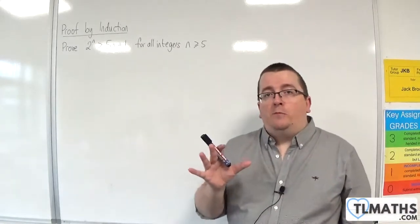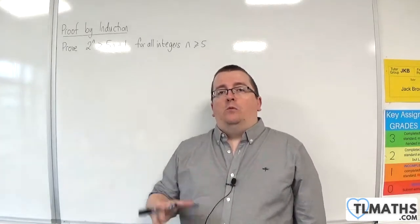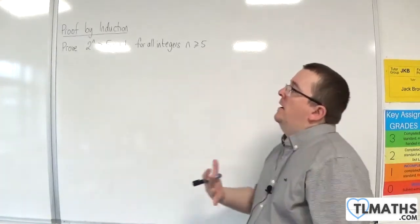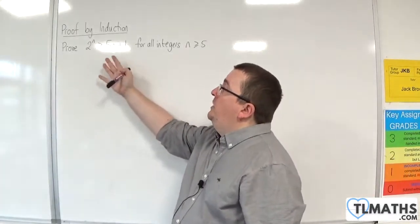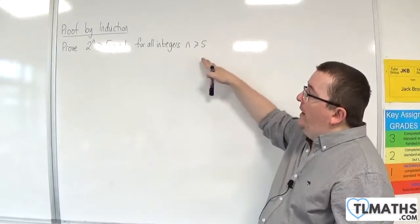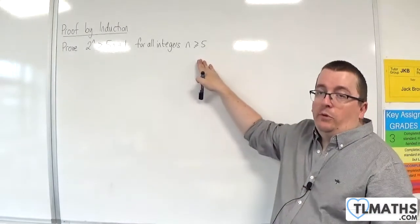In the next few videos, we're going to be looking at proof by induction examples where we're dealing with inequalities. And the first example I want to go through is this one, where we're going to prove that 2 to the n is greater than 5n plus 1 for all integers n greater than or equal to 5.